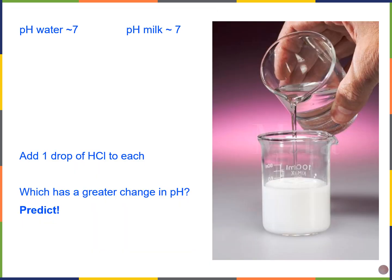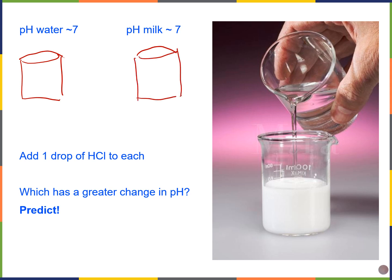This example might give us a clue. Let's say I have a beaker of water on my left and a beaker of milk on my right, and the pH of each solution is about 7, pretty close to neutral. Then I drop one drop of strong acid, hydrochloric acid, into each. After testing the pH, the water on the left might be around 2, but the milk on the right may be close to about 6. So the water had a much greater change in pH, and the milk didn't change as much.